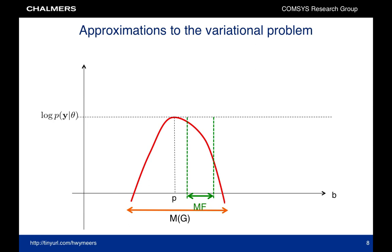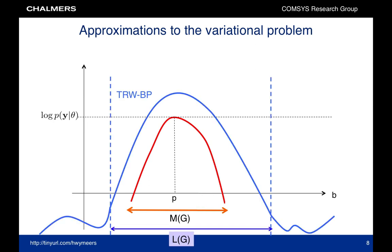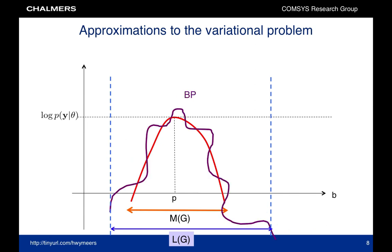Many existing message passing methods then relax the constraint set or the objective function. For example, mean field considers a smaller constraint set, for which the entropy is easy to compute. This leads to a lower bound on the log partition function. Tree-weighted belief propagation considers a larger constraint set, called the local polytope, for which the entropy is also easy to compute. The function itself is upper bounded. This leads to an upper bound on the log partition function. Finally, belief propagation is found by replacing the entropy with the so-called beta entropy, and performing the optimization over the local polytope. Belief propagation leads to an approximation of the log partition function.